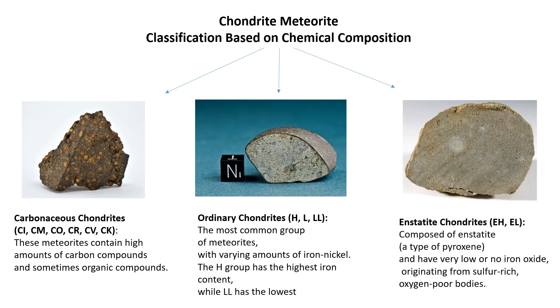Enstatite chondrites (EH, EL): composed of enstatite, a type of pyroxene, and have very low or no iron oxide, originating from sulfur-rich, oxygen-poor bodies.